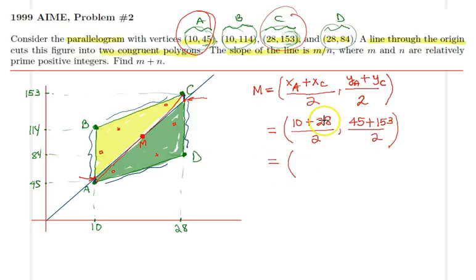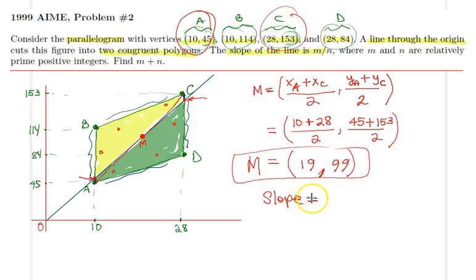We claim M is on the line through the origin which splits this parallelogram into two congruent polygons. Therefore, the slope of the line is simply equal to, we can use the coordinates of M to find the slope because our line goes through the origin, so it would be 99 over 19. Therefore the sum that we are looking for, m plus n, is simply 99 plus 19, which is 118. So that is the answer and we are done.